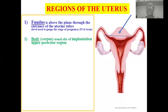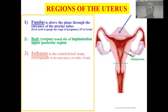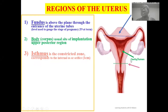Below the fundus is the body, also called the corpus (highlighted in green), which is the usual site of implantation — specifically at the upper posterior region of the body, directed closer to the fundus. At the inferior region of the body there is a constriction (highlighted in dotted green) referred to as the isthmus — a very short constricted region about one centimeter in length.